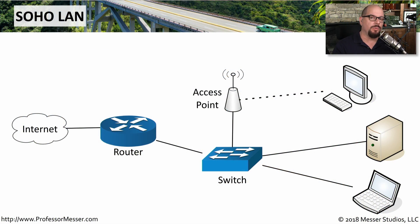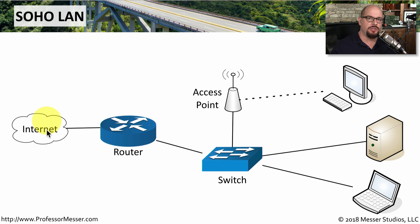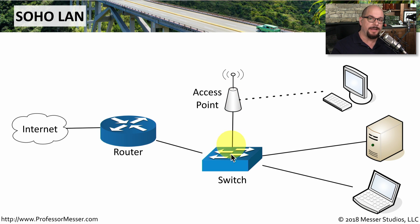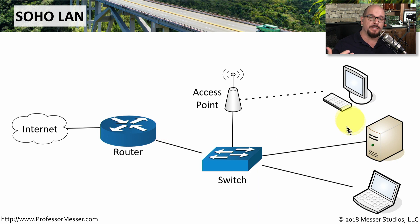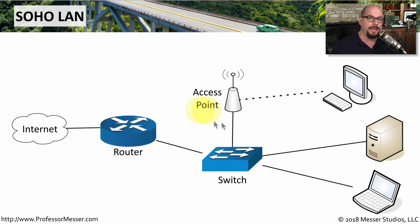Here's a picture of what the network commonly looks like in our homes. We have an internet connection, usually connected to a wireless router. I've broken out the different components of that wireless router: the wireless access point, the switch interfaces on the back, and the routing function itself. Computers and network devices on the inside of our network communicate out to the internet and back again.